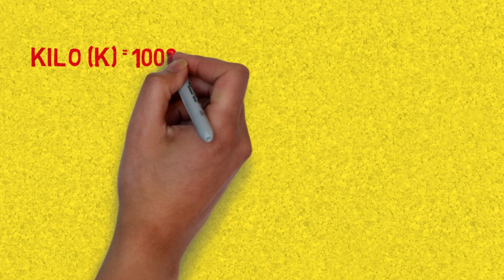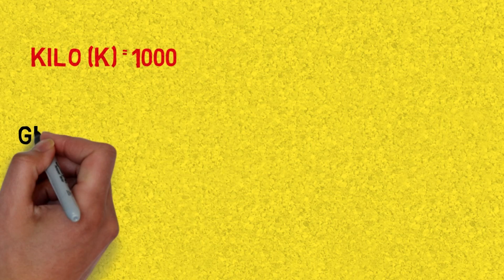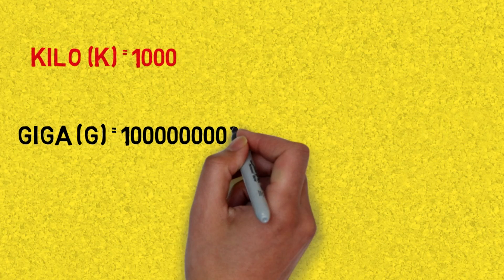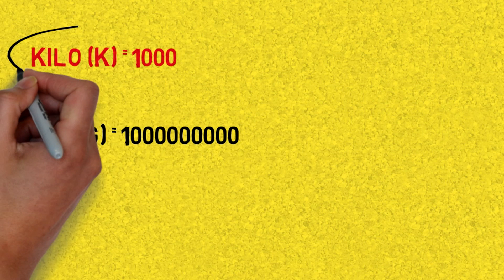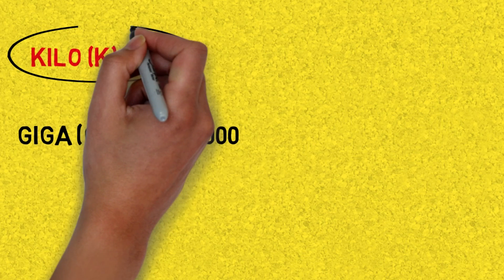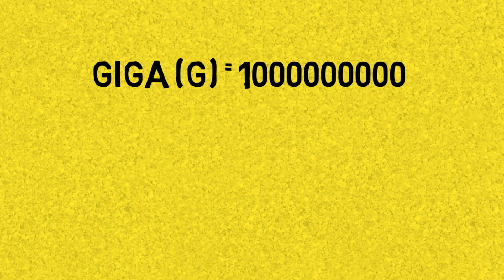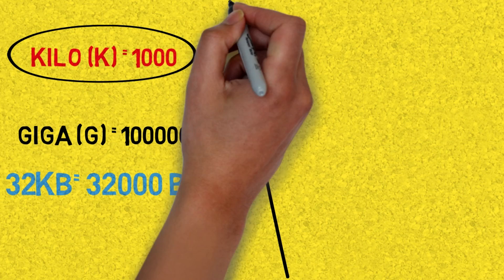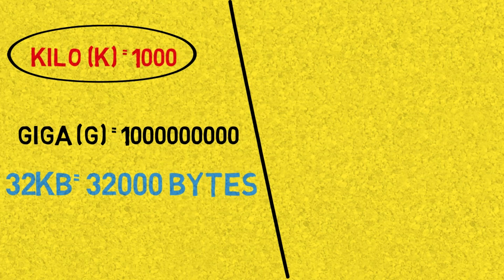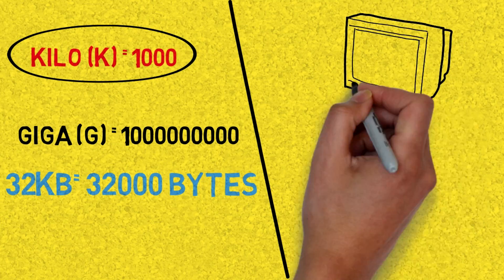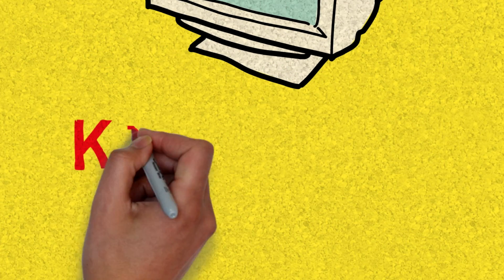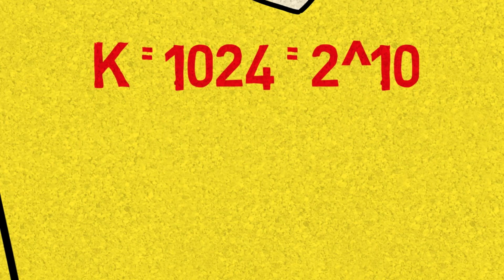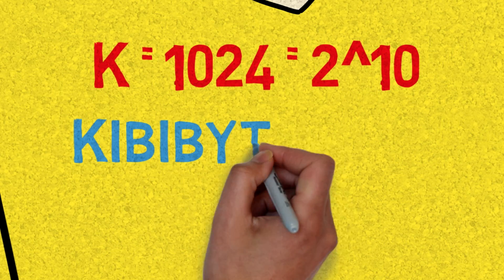Here's how it works. In plain English, 'kilo' or 'k' means 1,000, while 'giga' means 1 billion — that's a one with nine zeros. So 32 kilobytes should equal 32,000 bytes in plain English. But computers define a 'k' as 1,024 — that's a little bit bigger than the kilobyte we are used to.